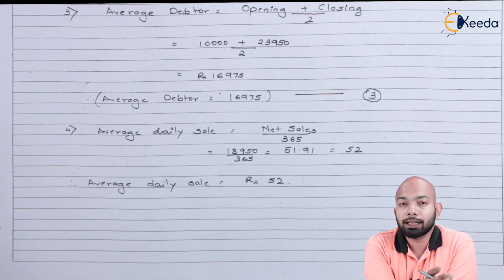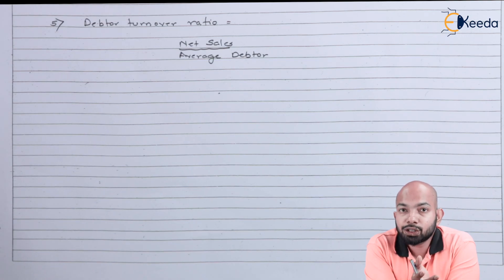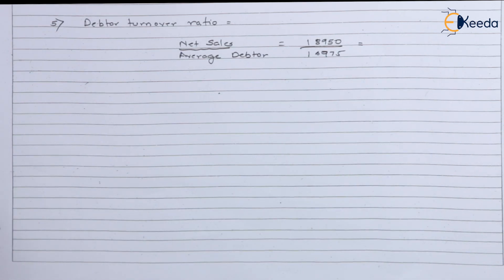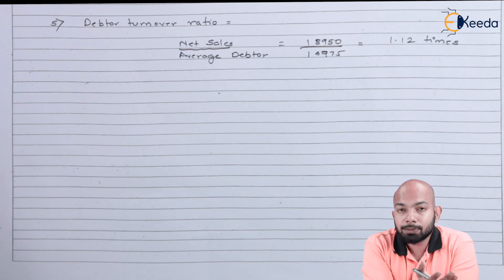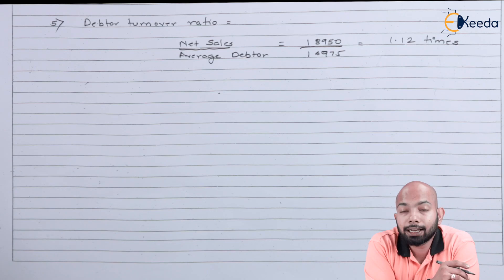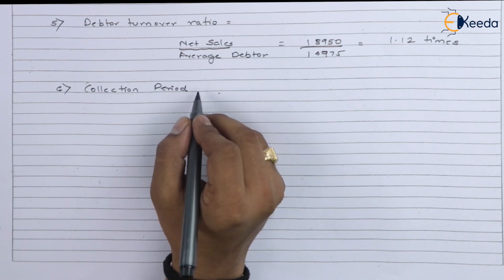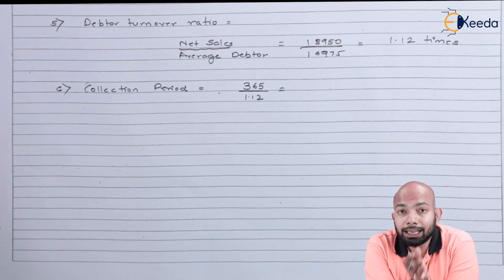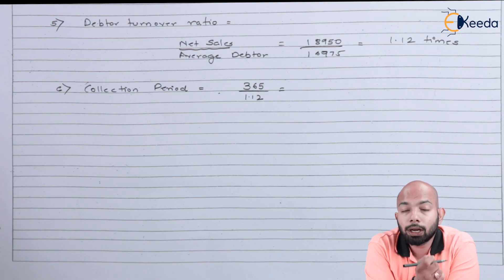To figure out the average daily sale, we take the net sales value already derived and divide it by the number of days in a year, which is 365. The average daily sale comes to Rs. 52. Now it's time to figure out the debtor turnover ratio. The formula is net sales divided by average debtors — both values we already have. The debtor turnover ratio comes to 1.12 times, meaning the debtor turnover happens 1.12 times in this business. To calculate collection days, 365 is divided by 1.12, which gives 326 days.